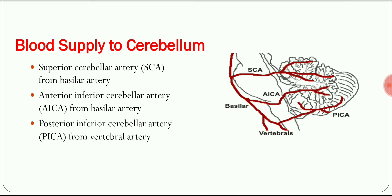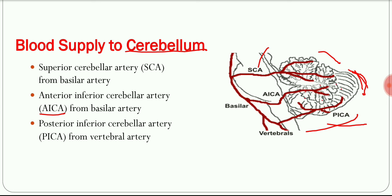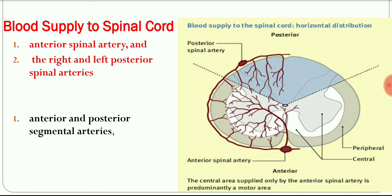The blood supply to the cerebellum is provided by three cerebellar arteries: the superior cerebellar artery supplies the upper portion, the AICA supplies the middle portion, and the PICA supplies the lower portion. The middle lobe of the cerebellum is supplied by all three arteries — superior, AICA, and PICA.